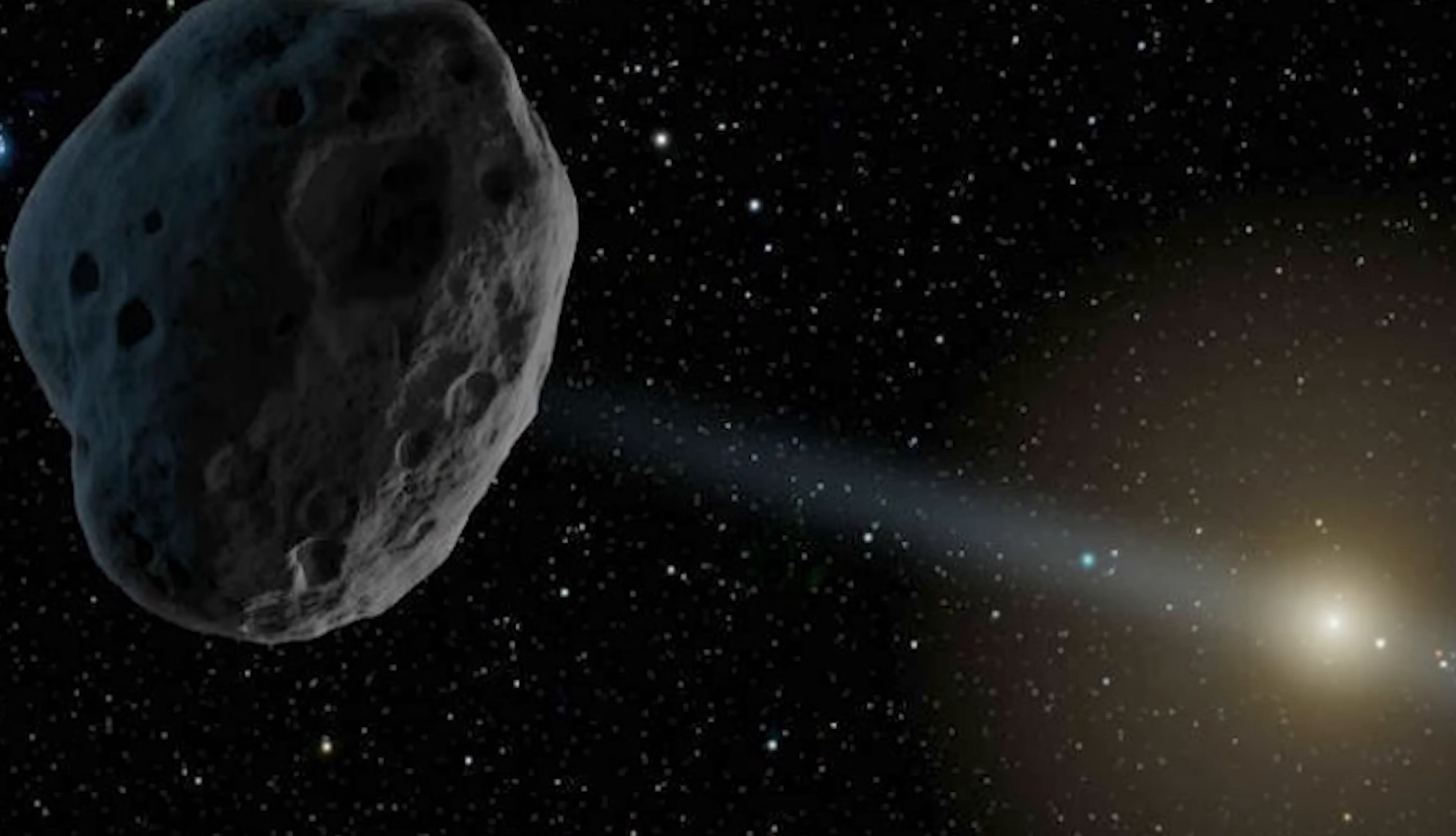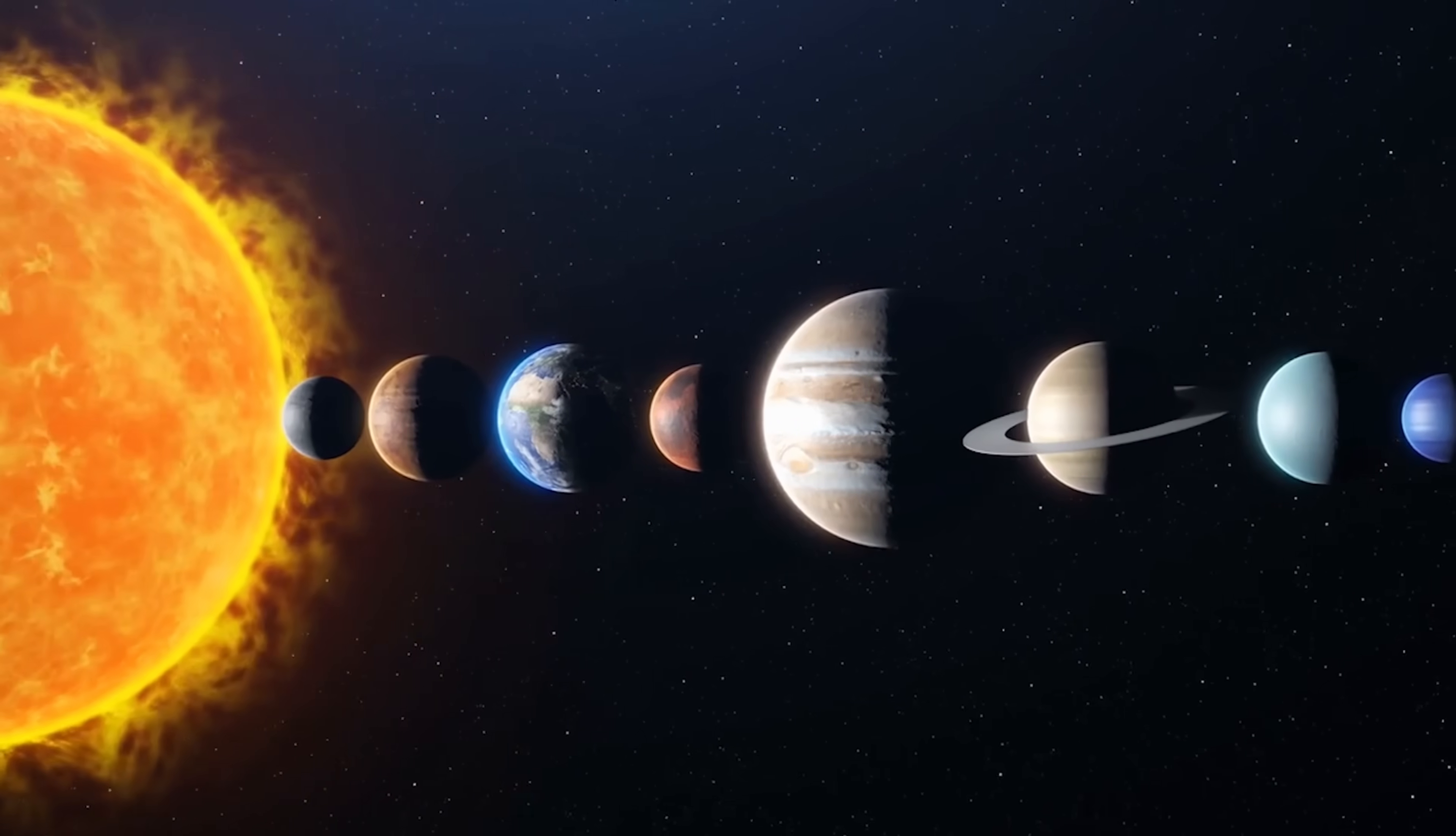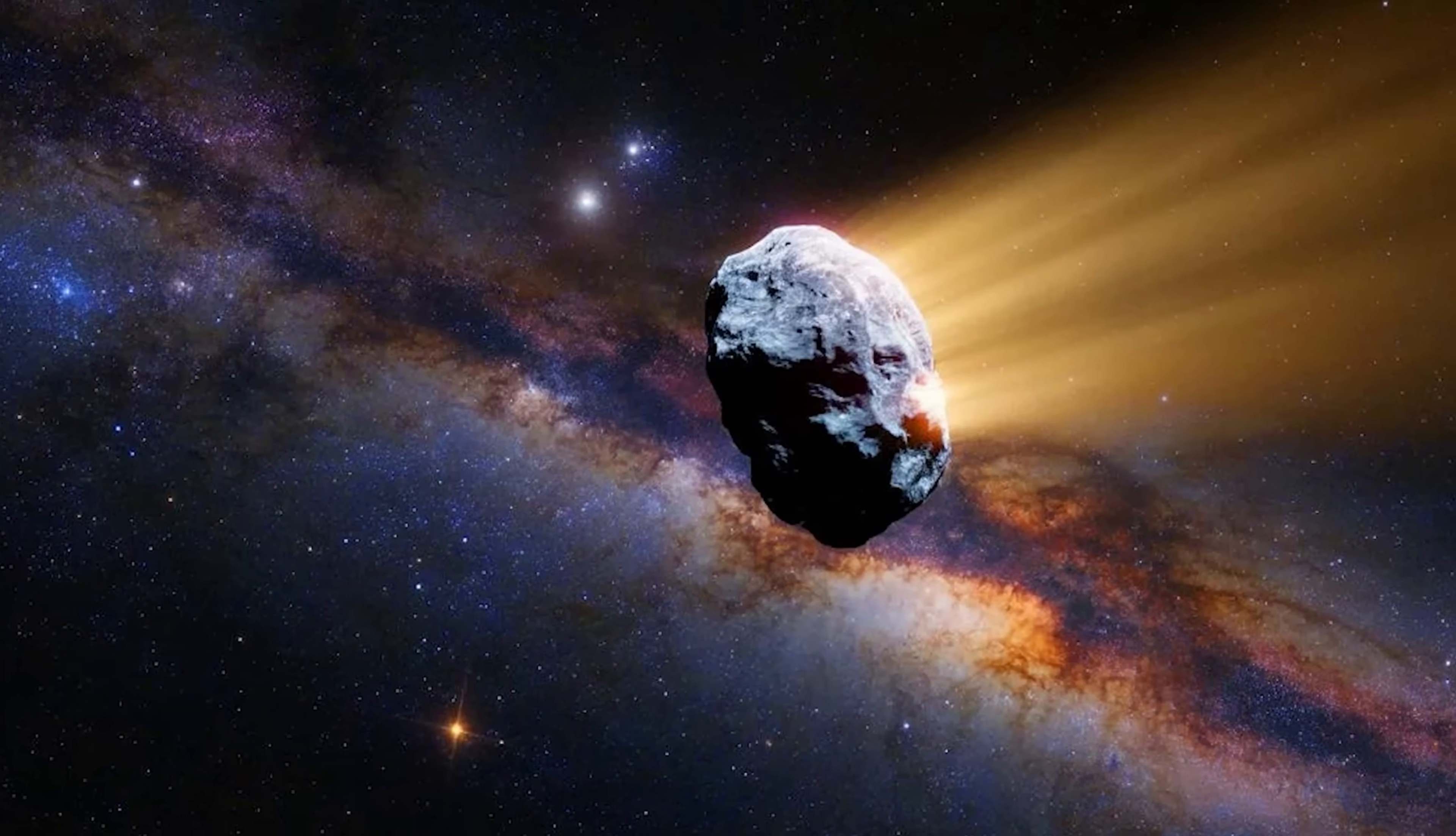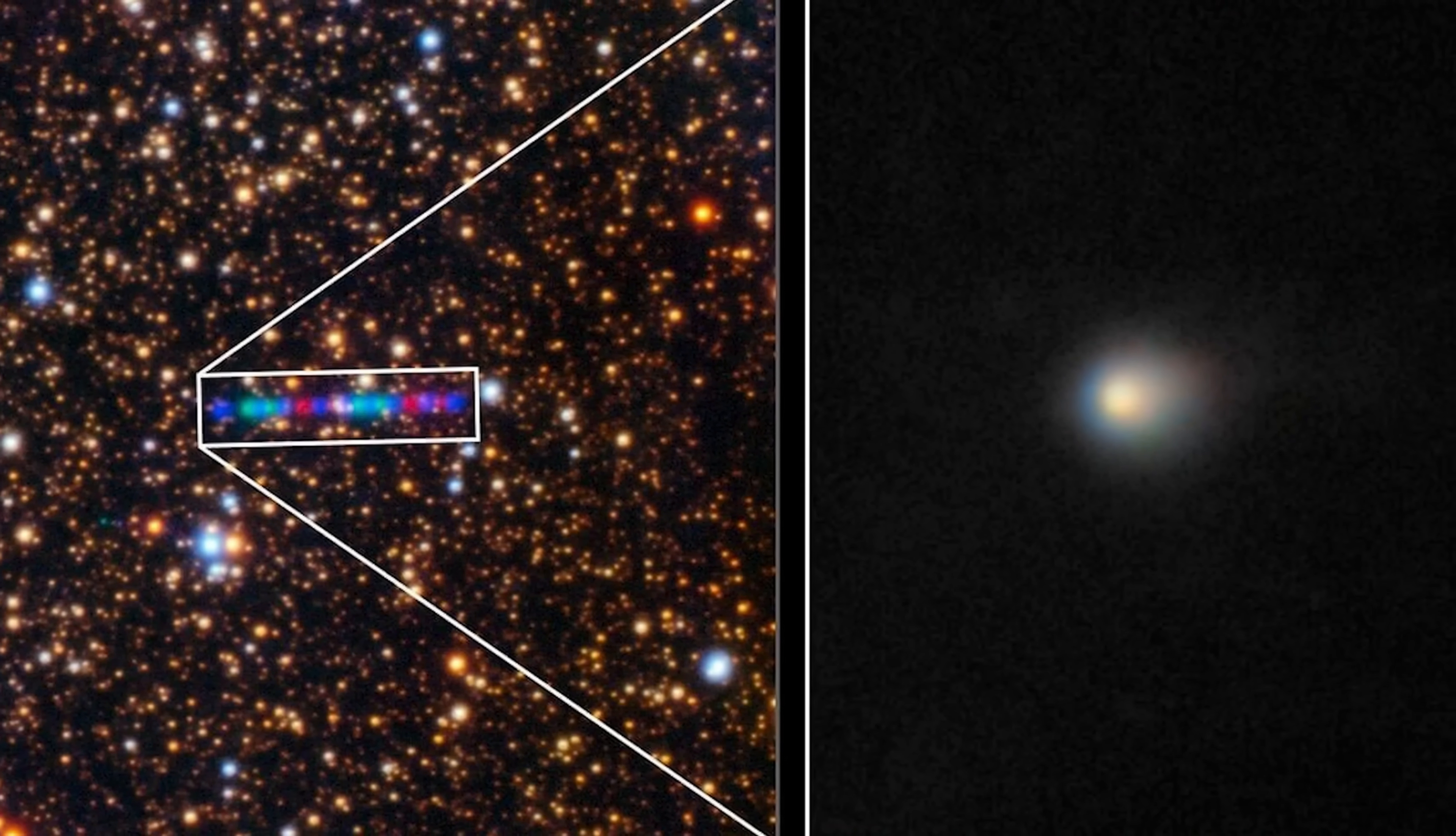This kind of activity is rare, but not unheard of. Comet 29P in our own solar system exhibits similar explosive outbursts, earning it the nickname the Volcano Comet. Still, 3I Atlas was operating under entirely different conditions, faster, smaller, and from another star system altogether.